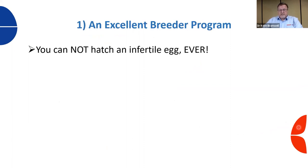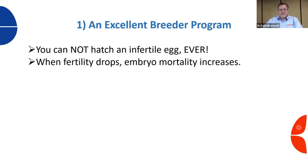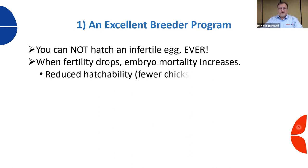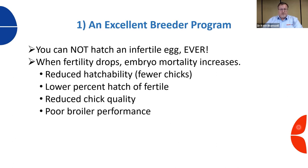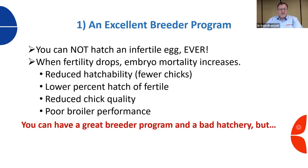We cannot hatch an infertile egg ever. When fertility drops, embryo mortality will increase. We not only lose the number of fertile eggs, but the embryo mortality of those fertile eggs will also increase. With reduced fertility we have drops in hatchability, lower percent hatch of fertile, reduced chick quality, and poor broiler performance. Research has shown that when fertility drops, we don't just lose those eggs - we lose hatch of fertile, chick quality, and broiler performance including seven-day and fourteen-day livability.